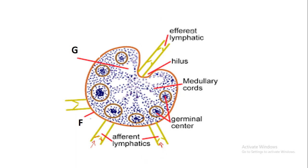You need to understand that the lymph node is the only lymphatic organ which has both the afferent and the efferent. Let's quickly look at F, which is the outer layer known as the capsule and it's part of the cortex. Then we have G which is just the medullary sinuses.